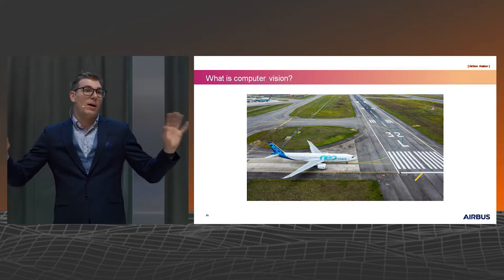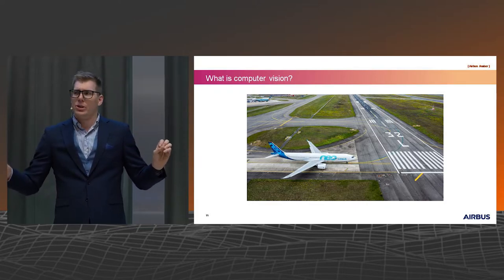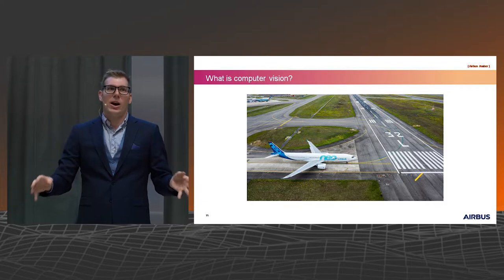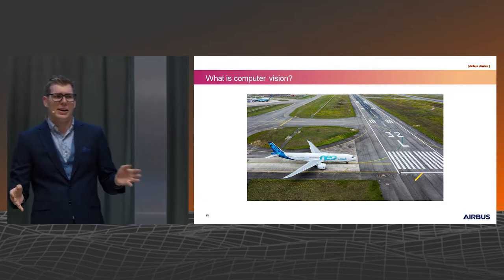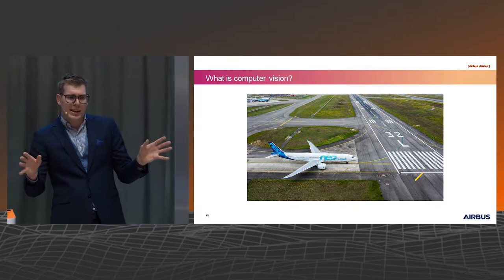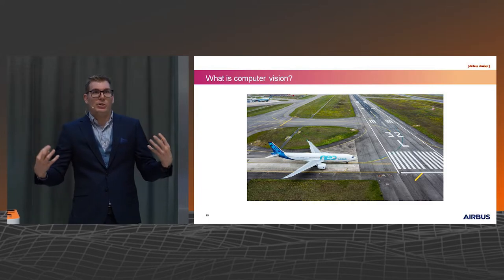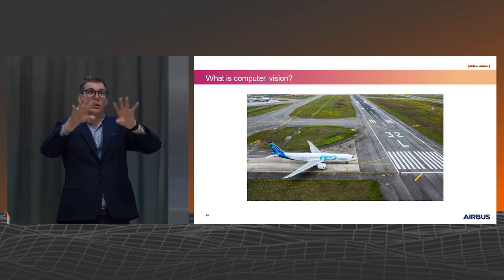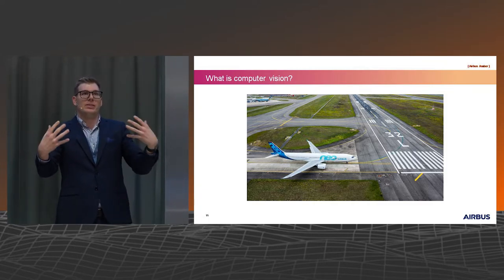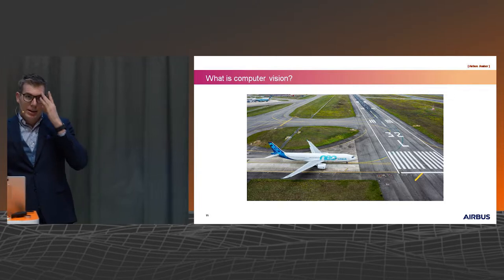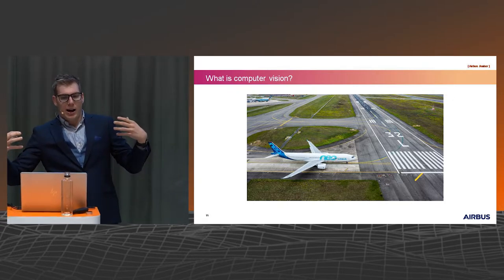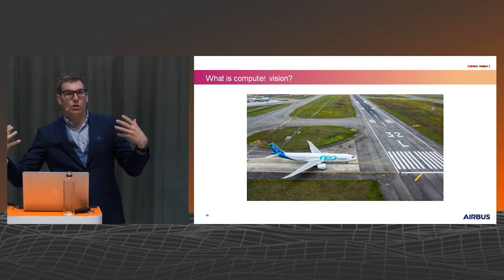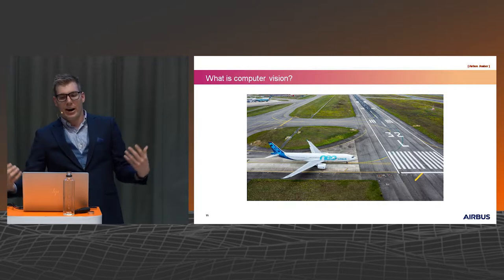I'm not a neuroscientist, so I'm not sure if this statistic is right, but I was reading somewhere that something like 80% of our brain — probably not 80% — is responsible for actually doing the processing for what we're seeing. Anyway, a huge amount of our brain is to do with actually understanding and perceiving the world around us.